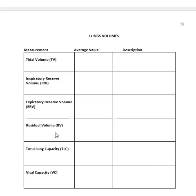The expiratory reserve volume is how much you can blow out beyond a normal breath. A lot of people don't realize they also have a residual volume — air you never, ever breathe out. If you actually breathed out all the air including your residual volume, your lungs would collapse. So when we look at the cells, we'll learn about surfactant and how it keeps our lungs from collapsing.